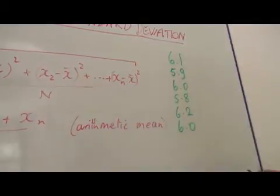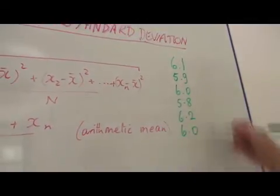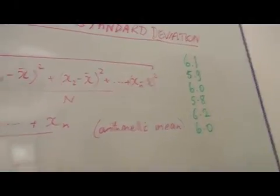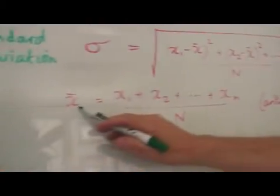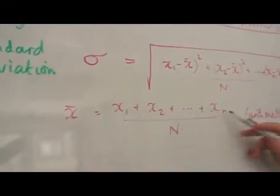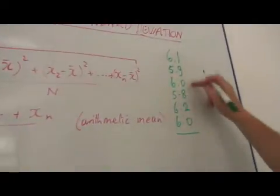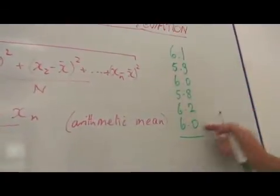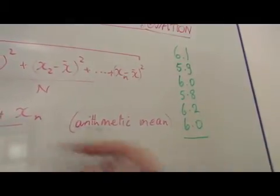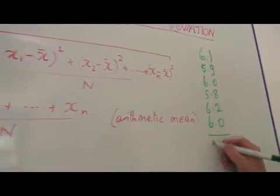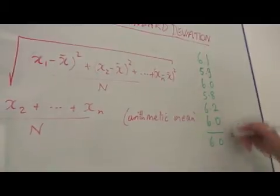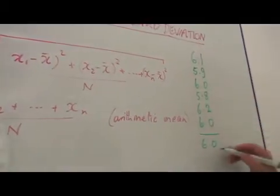Each of these readings is slightly different, but I know that I can use this formula to get the arithmetic mean just by adding all these together and dividing by 6. Because there are 6 readings (1, 2, 3, 4, 5, 6) and I divide by 6, the average of these, the mean of these, is 6.